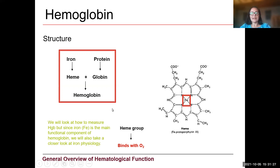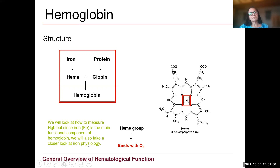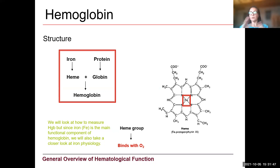We're going to look at how to measure hemoglobin in class — it's one of the ways we assess for anemia. And we're going to take a closer look at iron physiology: the fact that we have to get it in our diets, but also absorption of the iron, storage of the iron, and transferring iron from one part of the body to another.